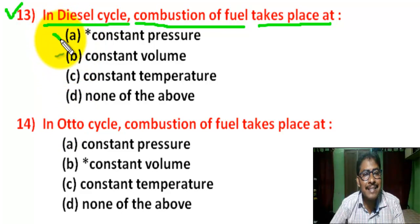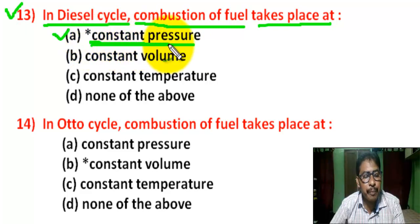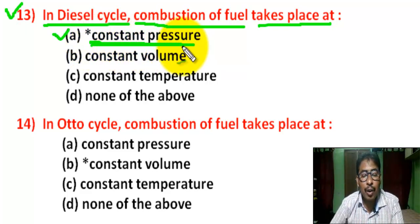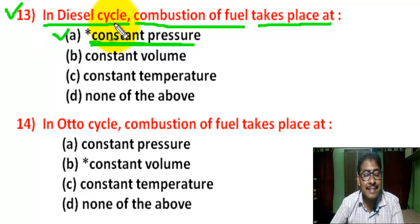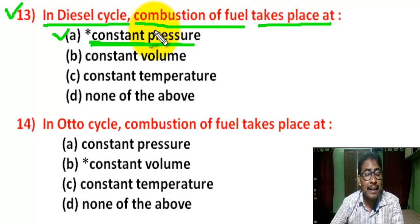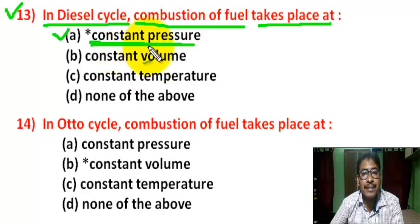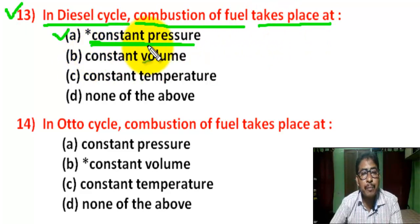Question number 13: In the diesel cycle, combustion of fuel takes place at — there are four options. Correct answer is A — constant pressure. At the end of the compression stroke in the diesel cycle, the fuel is injected at very high pressure into the compressed hot air, and combustion takes place at constant pressure.